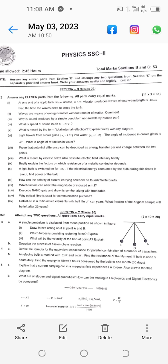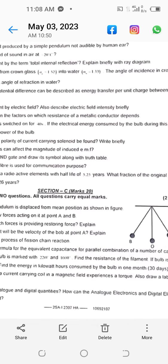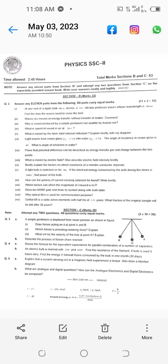An electric bulb is marked with 220 and 100. Find the resistance of the filament. If bulb is used 5 hours daily, find the energy in kilowatt hours consumed by the bulb in 1 month, 30 days. And last question, part A.